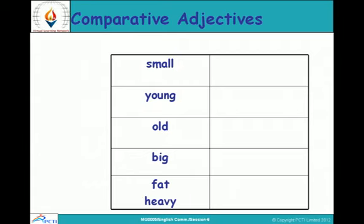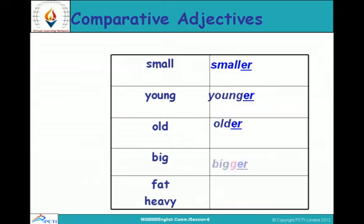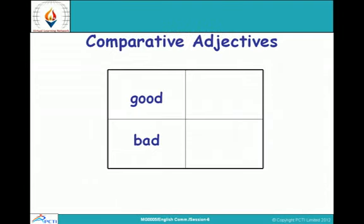Let us look at some quick comparative adjectives: small→smaller, young→younger, old→older, big→bigger, fat→fatter, heavy→heavier. Now, good — its comparative adjective is not 'gooder'. Good becomes better. Bad becomes worse. For example: this pen is good, but that pen is better. Reynolds pen is good but Rotomac pen is better.